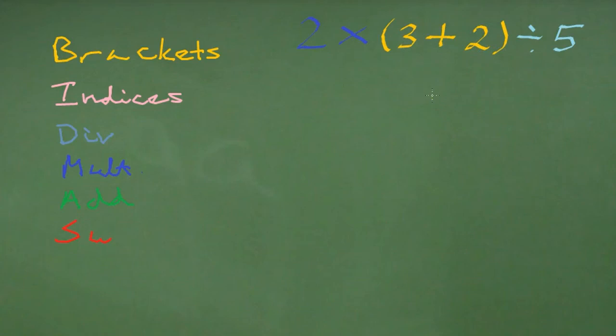So we do that bit first. We put the 5 for the 3 plus 2 inside the brackets, and then we have the 2 times 5 and then divided by 5.